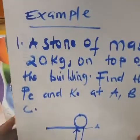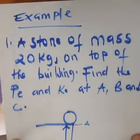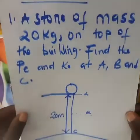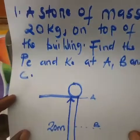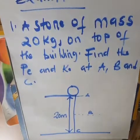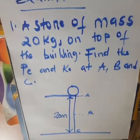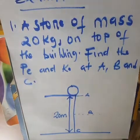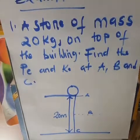Let's look at this example: a stone of mass 20 kg is on top of a building — find the potential energy and kinetic energy at points A, B, and C. The height is 20 meters. Remember: distance must be in meters and mass must be in kilograms, so convert if given grams or centimeters. At each point we will find both kinetic energy and potential energy.